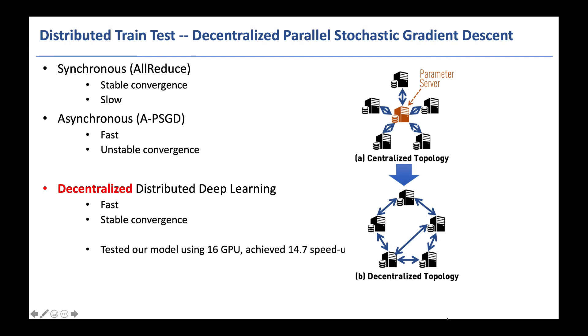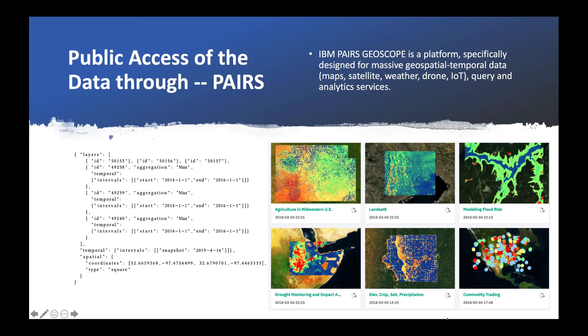In our experiment, we achieved a speedup of 14.7x utilizing 16 GPUs. We have made our results publicly accessible through the big data platform PAIRS.